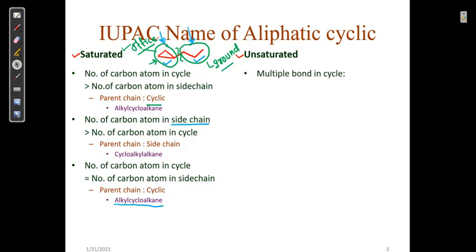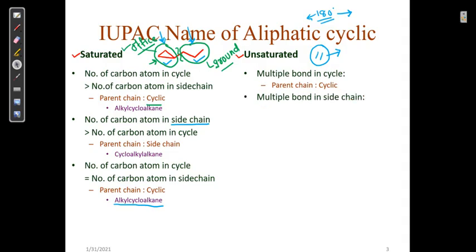In the case of unsaturated compounds, we deal with multiple bonds. According to our story, the multiple bond represents the principal sir. Most probably it is a double bond, because a triple bond has 180-degree geometry and could not form a cycle. If the multiple bond is in the cycle, the principal sir is in the office, so the parent chain is cyclic. If the multiple bond is in the side chain, the principal sir is on the ground, so the parent chain is the side chain.